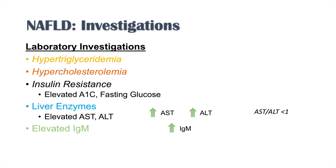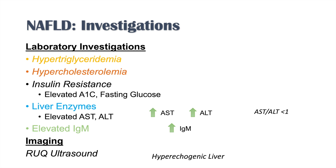Imaging is really what will help confirm the diagnosis. A right upper quadrant ultrasound is the key imaging modality, and what you'll see is a hyperechogenic liver. I would encourage you to look up images of a normal liver versus a hyperechogenic fatty liver to see the differences — there will be noticeably more echogenicity on the ultrasound.